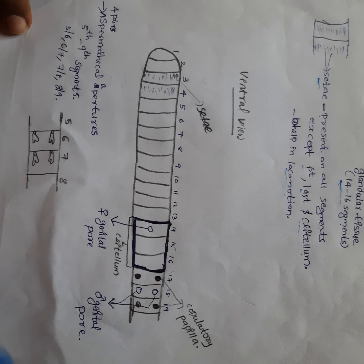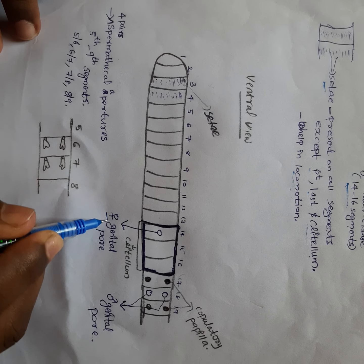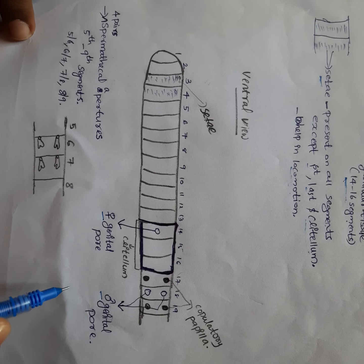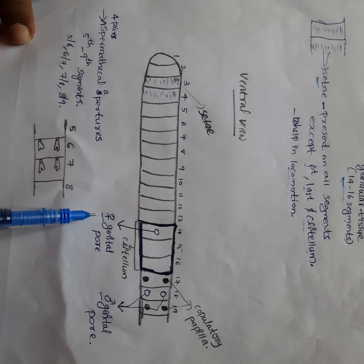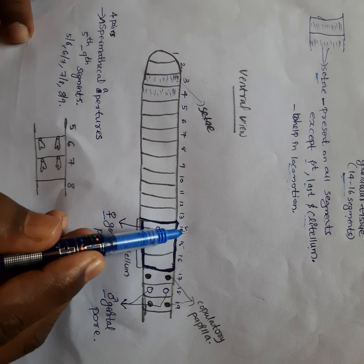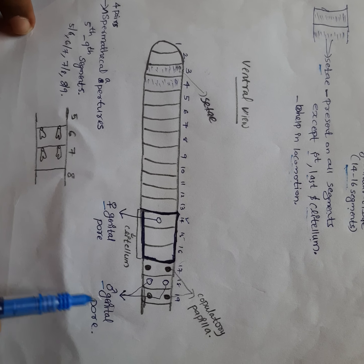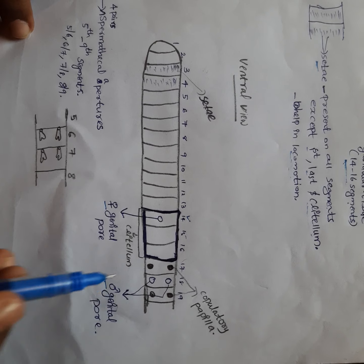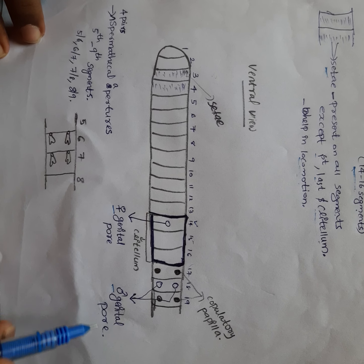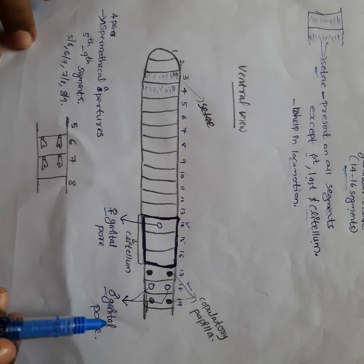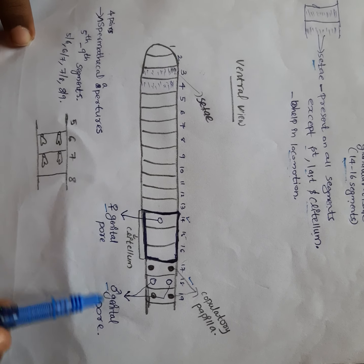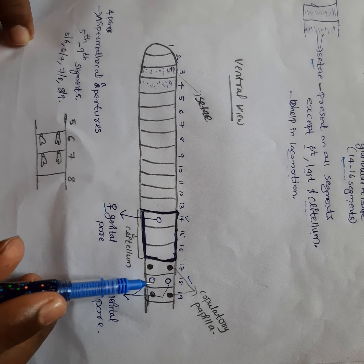In the ventral view, the important structures are the female genital pore and male genital pore. You can see a single female genital pore on the 14th segment. There will be a pair of male genital pores on the 18th segment. Female genital pore is single but male genital pore is a pair.